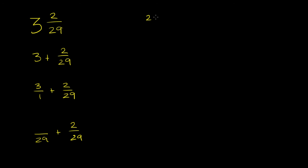Let's see. 29 times 3: 9 times 3 is 27, 2 times 3 is 6 plus 2 is 8. 87.